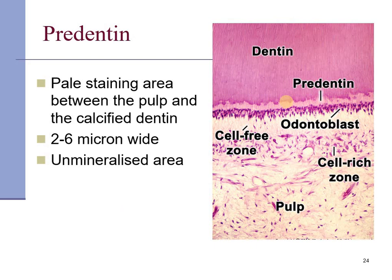Pre-dentine is an unmineralized component of dentine. It roughly forms a 2 to 6 micron thick area above the odontoblastic zone.